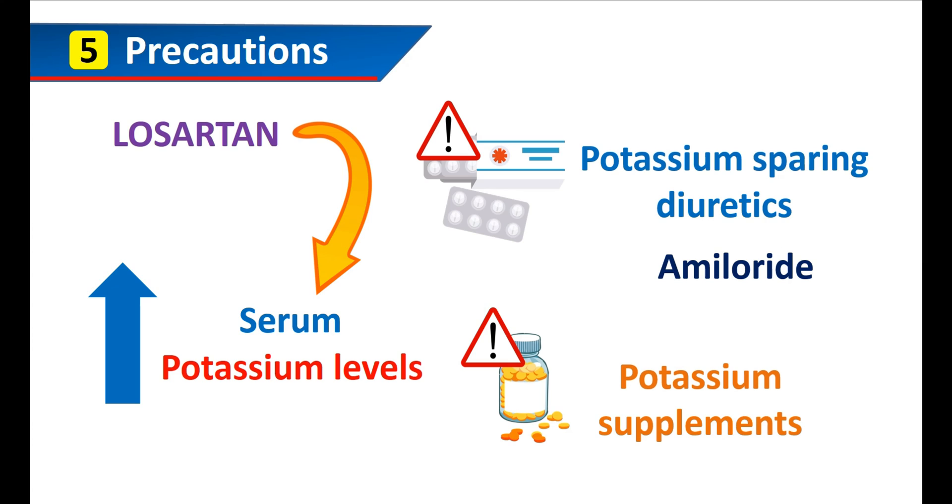Even potassium-rich foods like bananas, apricots, avocados, a few vegetables, and nuts may also increase the serum potassium levels. So, when Losartan is used for longer periods, potassium-rich foods should be consumed at a moderate level.